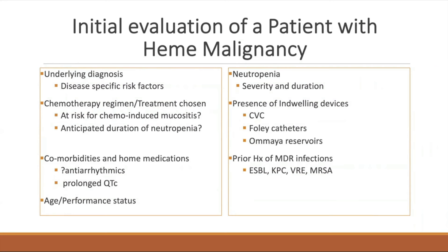For example, a patient with multiple myeloma is at high risk for HSV and VZV, but not at risk for PCP unless they receive CAR-T or high-dose steroids for an extended period. Patients with ALL are not the same as AML — ALL patients are at baseline risk for PCP due to their immunologic defects, while AML patients generally do not get PCP unless they undergo transplant, prolonged high-dose steroids, or CAR-T treatment.